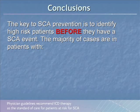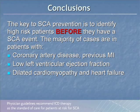Conclusions: The key to sudden cardiac arrest prevention is identifying high-risk patients before they have an event. This represents a landmark shift in medicine — offering these therapies as primary prevention, with payers and government willing to pay for expensive devices before something happens. The majority of cases are in patients with coronary artery disease, previous MI, low ejection fraction, or dilated cardiomyopathy and heart failure. Patients with those obvious risk factors need to be referred to an electrophysiologist.